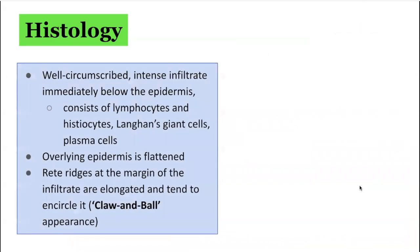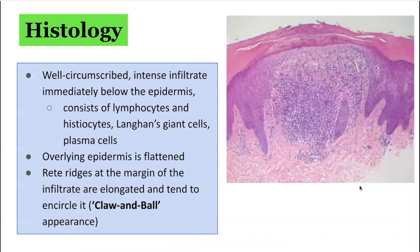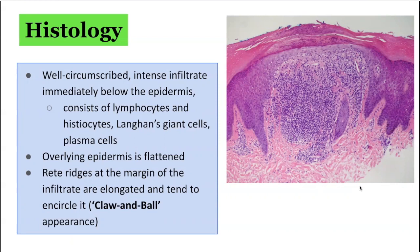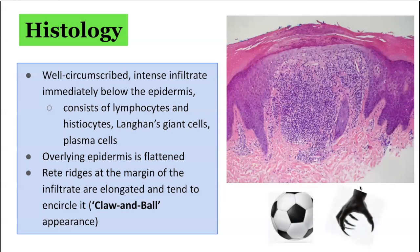In terms of the histological findings of lichen nitidus, it is very distinctive. A well-circumscribed infiltrate composed of lymphocytes, epithelioid cells, and occasionally Langhans giant cells, is typically clutched by surrounding hyperplastic rete ridges in a ball and claw configuration. The overlying epidermis is usually atrophic, and frequently exhibits a parakeratotic cap centrally. Absence or thinning of the overlying granular layer is seen, and vacuolar degeneration of the basal layer of the epidermis is often observed. The primary cell type in the dermal infiltrate are lymphocytes and epithelioid cells. Remember the ball and claw appearance of lichen nitidus.